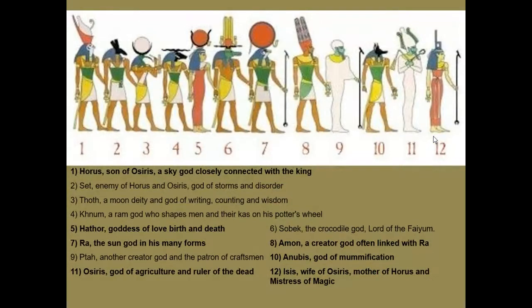You don't have to know all of the various gods, but it's important to remember that Egyptian society had a polytheistic religious culture. There are several gods you'll see quite frequently in the art. This is Horus, who is the son of Osiris, depicted here with his falcon guise for his head.